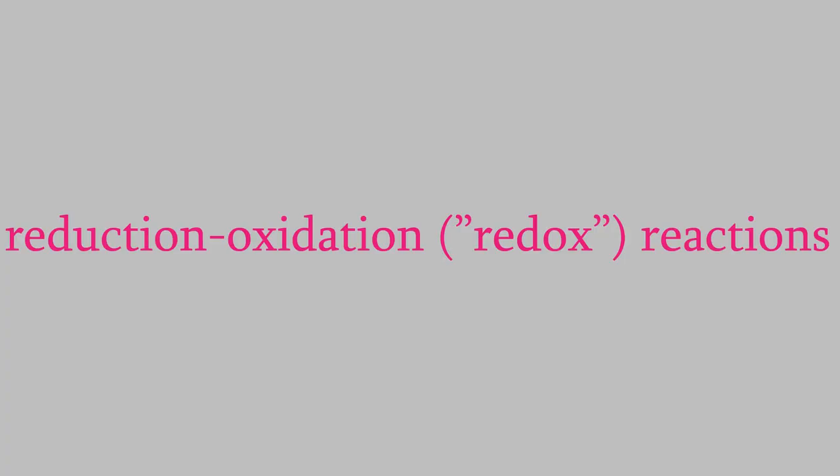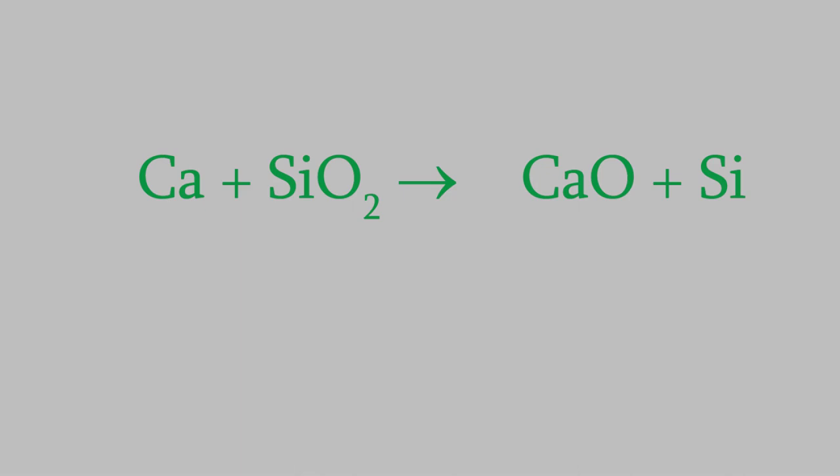So what is a redox reaction? Redox is short for reduction-oxidation. To understand these reactions, we have to understand what reduction and oxidation are. The key is to think about the charges on the atoms in the compounds that take part in the reaction. For example, here's a reaction in which calcium reacts with silicon dioxide, with products calcium oxide and silicon. In order to understand any redox reaction, the important thing is to know what the charge is on each of the atoms. There are a few simple rules for figuring out charges on atoms in a molecule.